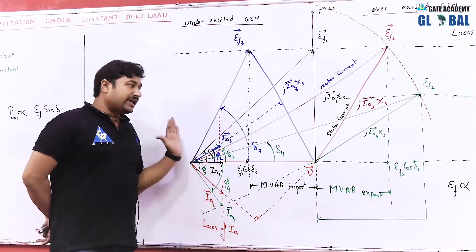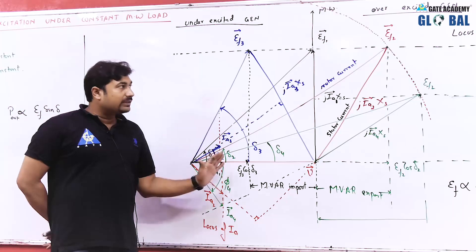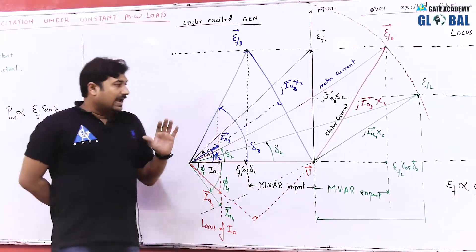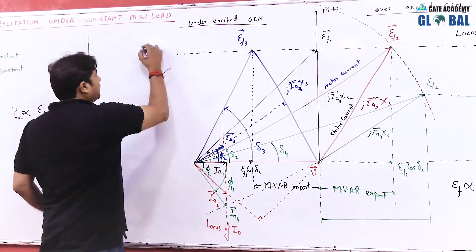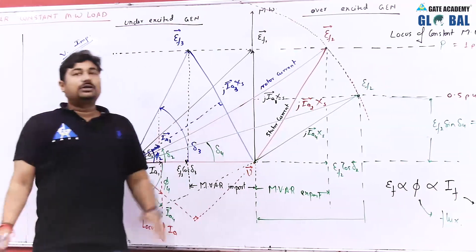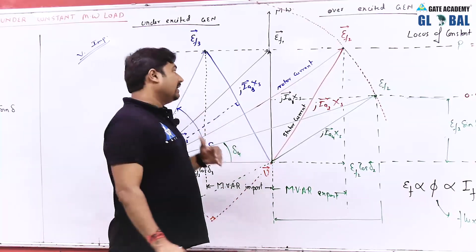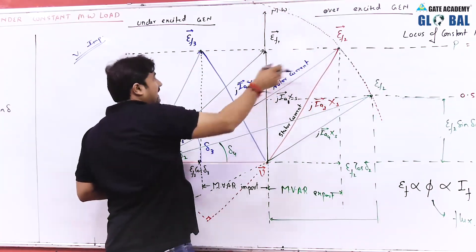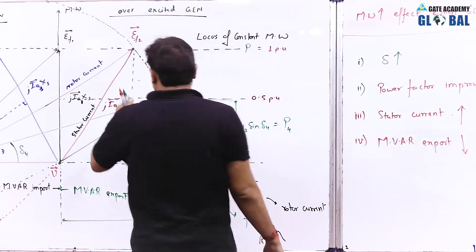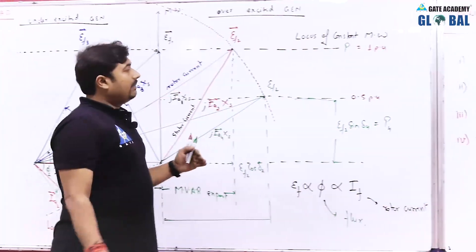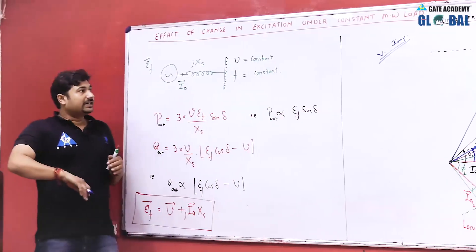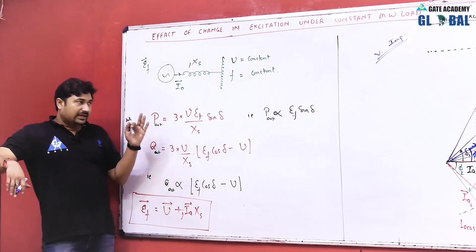By changing excitation, reactive power flow can be controlled; by changing fuel input, active output power can be controlled. This allows us to obtain active and reactive power flow as per our design. This phasor curve is very important and useful for numericals in GATE and ESE examinations. Most questions ask what happens to stator current and power factor with change in excitation or megawatt. I categorize this as the most important topic for cylindrical rotor synchronous machine for objective examinations — go through it more than once.